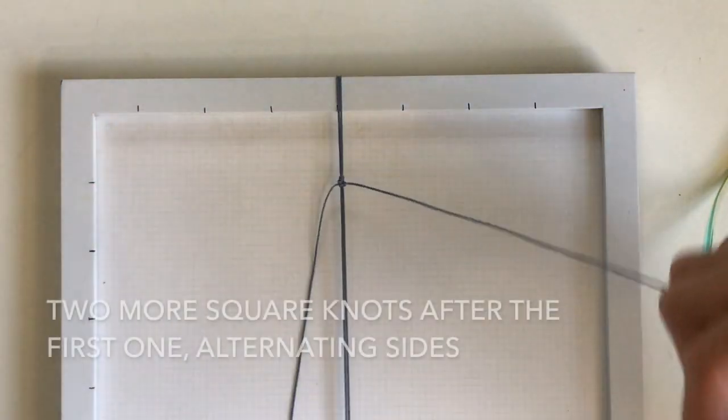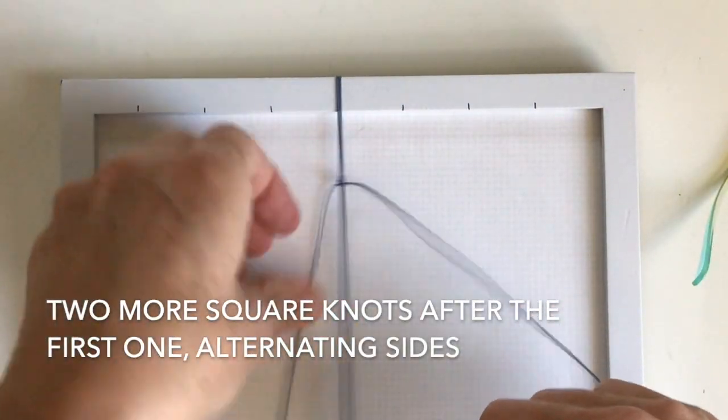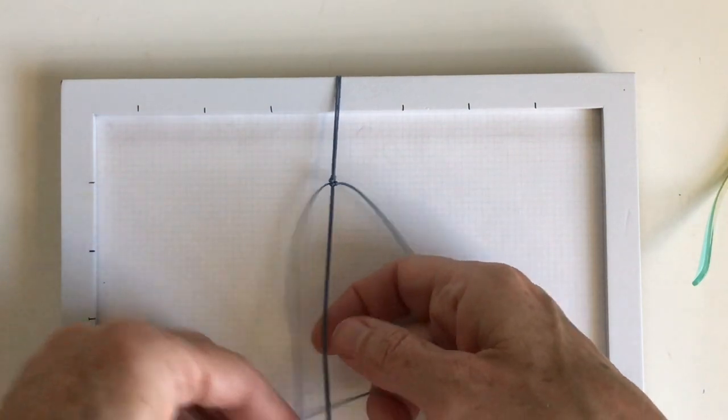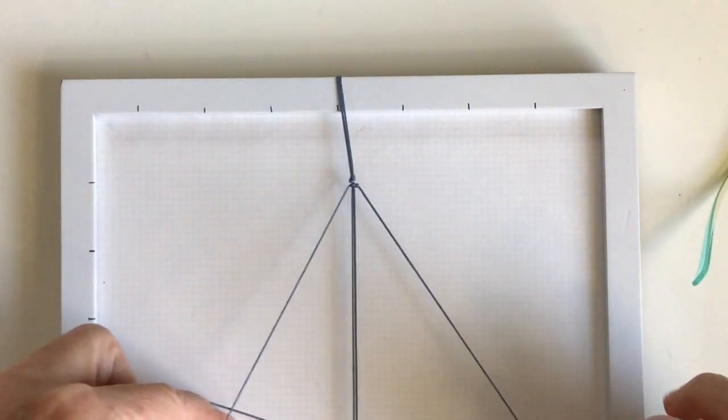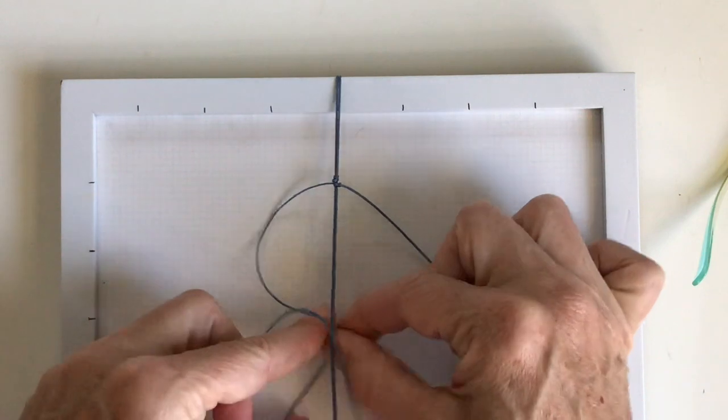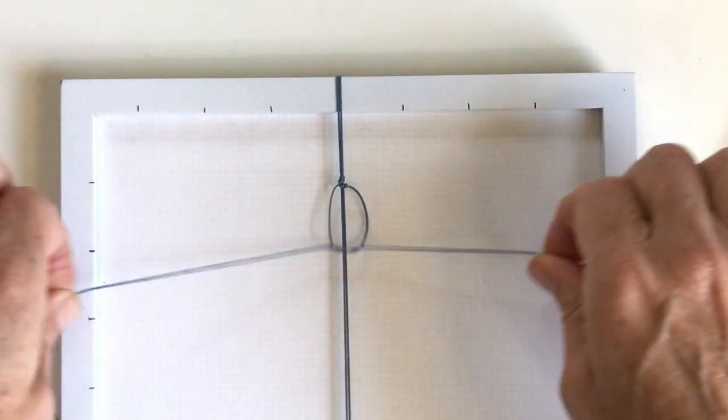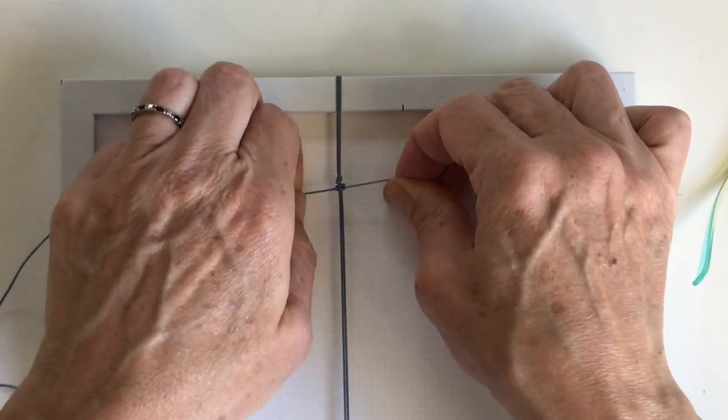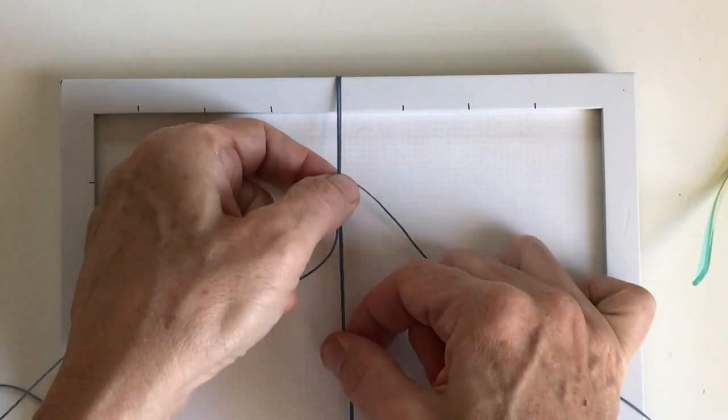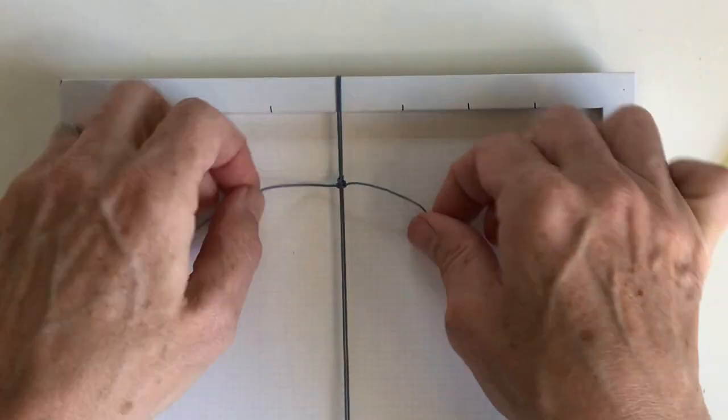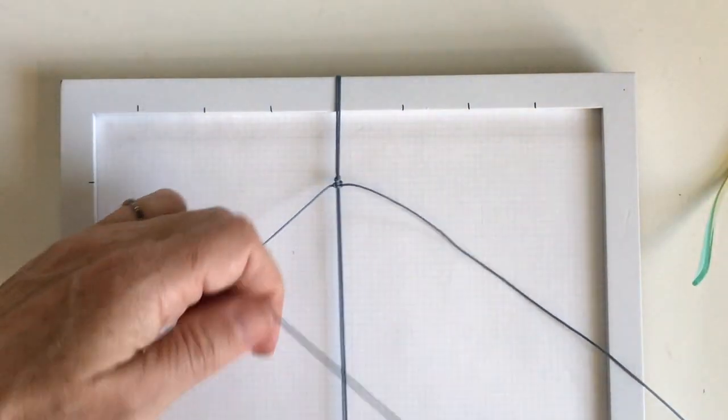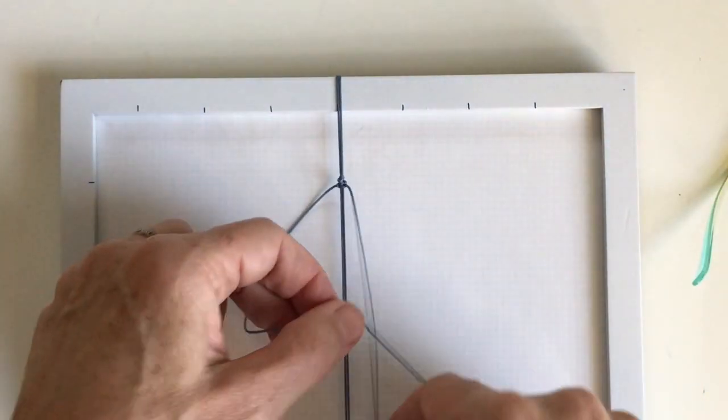And just pull it snug right below the half knot. Then you're going to do two more alternating sides. So number four, pull the other one up and through and pull it snug. Make sure you got it right up against that knot. And then this side again.